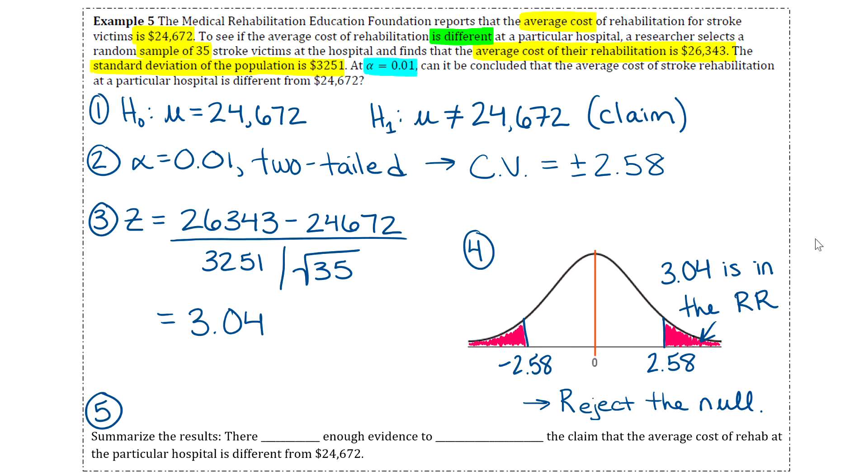And then step five, we'll summarize our results. So the claim is in the alternative hypothesis, and we are rejecting the null hypothesis. So that tells us that there is enough evidence to support the claim that the average cost of rehab at the particular hospital is different from $24,672. So this will take a break, and we'll go to the next video. Thank you.